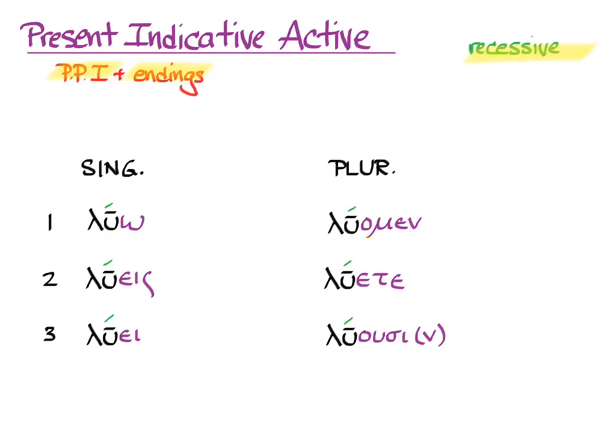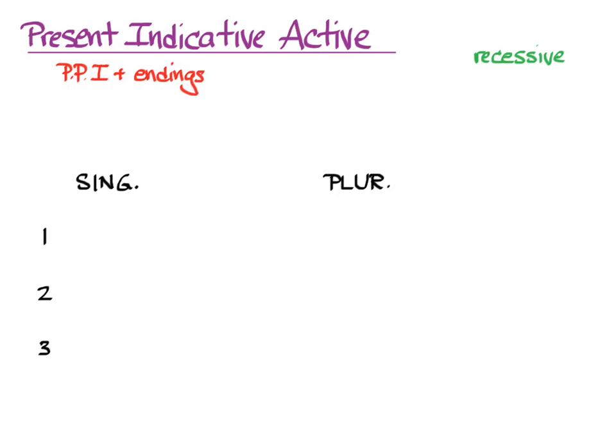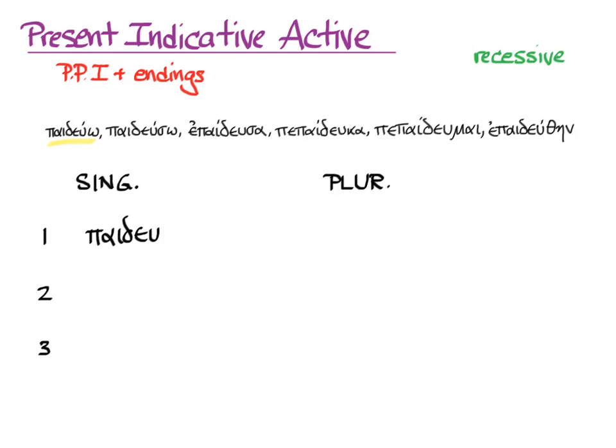That's the whole conjugation. Let's try another verb. Here's παιδεύω, educate, and its six principal parts. We go to the first and take off the omega to get our stem. We add the ending and the recessive accent.